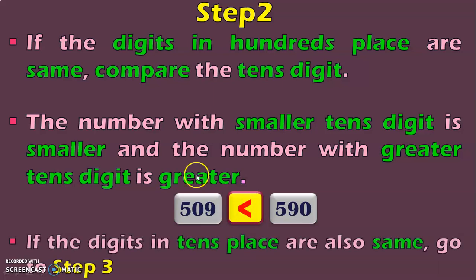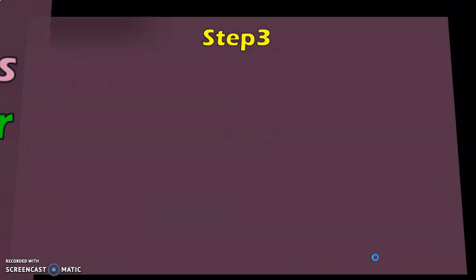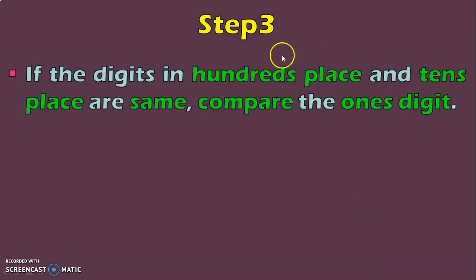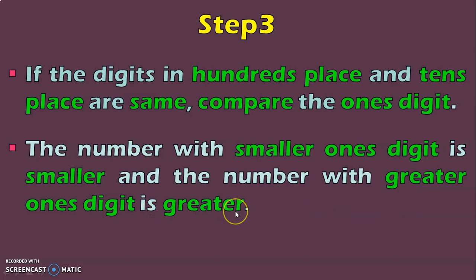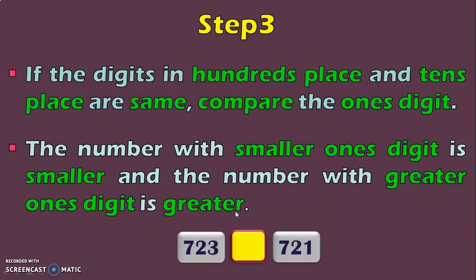In cases where the tens place digits are also the same — that is, the hundreds digit and the tens digit are both the same — then you will have to compare the ones digit, which is the next lower place value. The number with the smaller ones digit is smaller, and the number with the greater ones digit is greater.